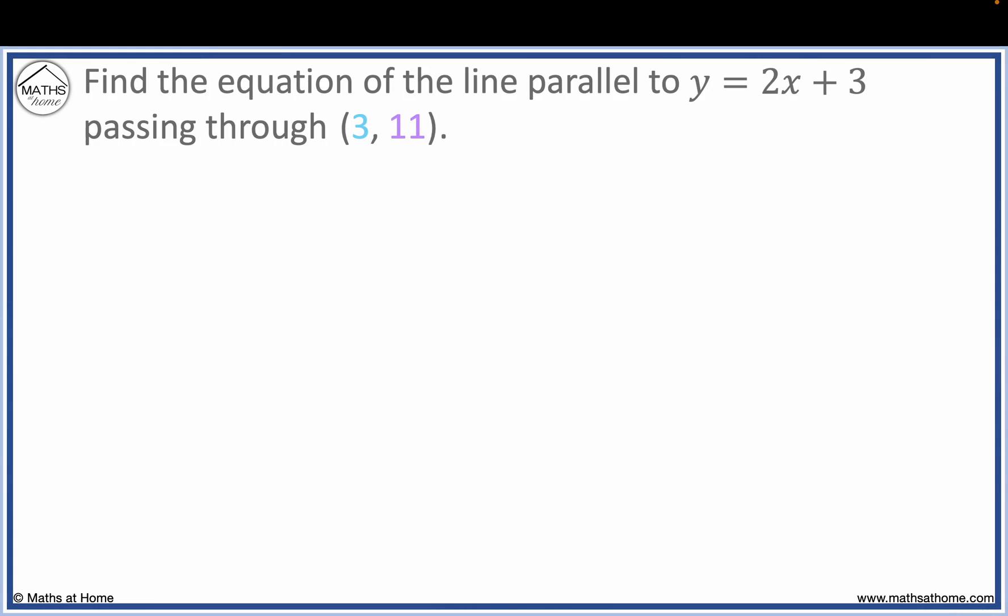For example, find the equation of the line parallel to y equals 2x plus 3, passing through (3, 11). To be parallel to 2x plus 3, the line must also have a gradient of 2. We write y equals 2x plus c.